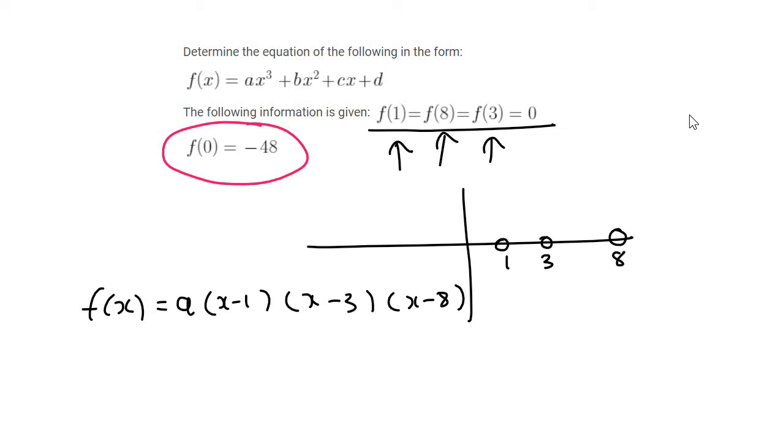So that means that the y value is minus 48 when the x value is 0. So that's a minus 1. And so that's minus 48 equals to a. Now this is just minus 1 multiplied by minus 3, which is 3, multiplied by that, which is going to be negative 24. We can then divide both sides by negative 24, and we'd find that a is 2.